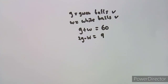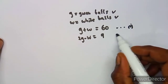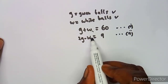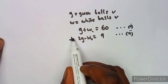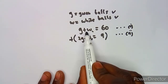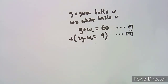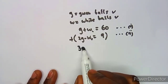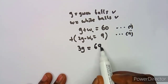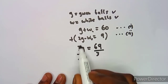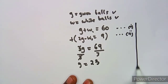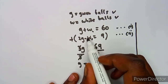There are many methods to solve simultaneous equations — elimination or substitution. Since w and −w appear in the two equations, we can eliminate by adding them: g + 2g = 3g, and 60 + 9 = 69. Dividing by 3 gives g = 23.